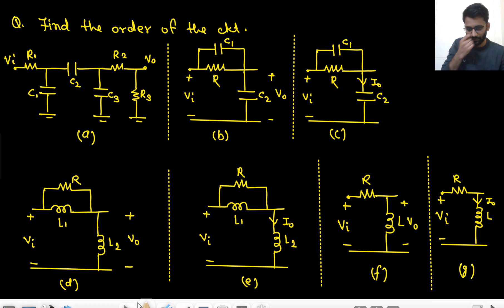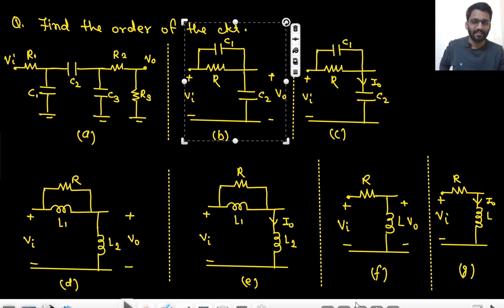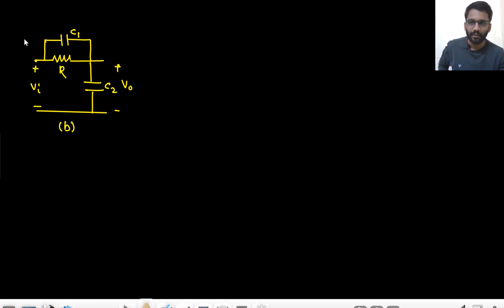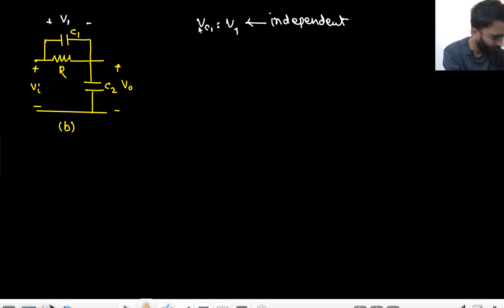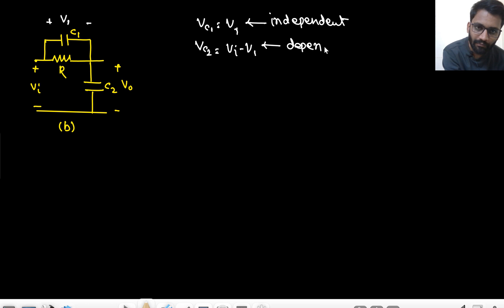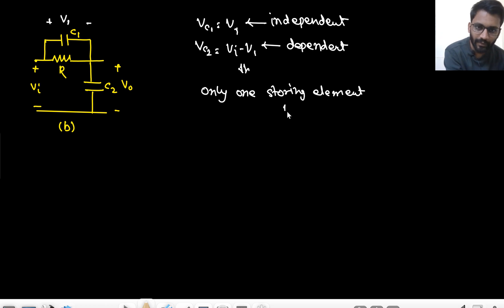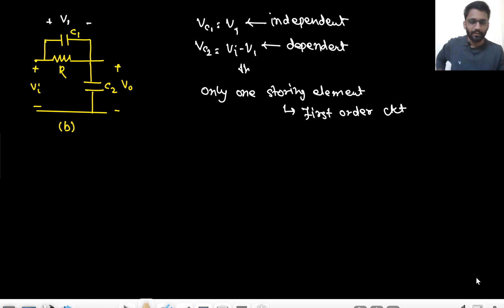So the first circuit was second order and the second question's circuit is first order. Let me show why: if I give V1 voltage to VC1, so VC1 = V1 (independent), then VC2 = VIN minus V1, which is dependent. So there is only one effective storing element — meaning it is a first-order circuit.